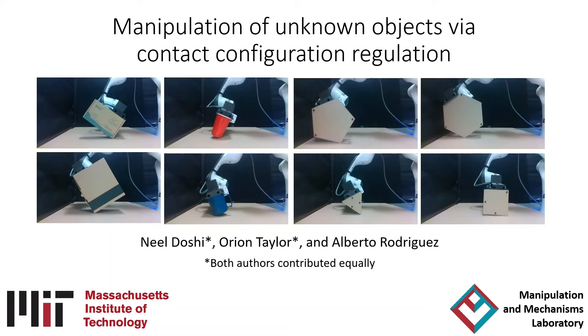We present a joint estimation and control framework for the manipulation of unknown objects using feedback from robot proprioception and a force torque sensor in the wrist.